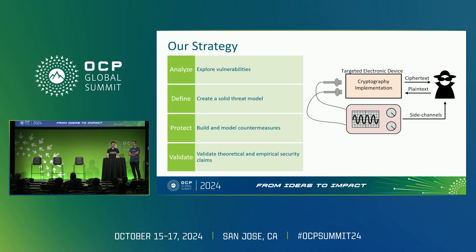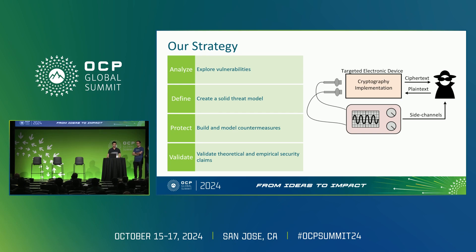We have a four-step strategy. First, analyzing — exploring vulnerabilities and creating a solid threat model defining our threat vectors. Based on the threat vectors, we build countermeasures to protect our design against side channel attacks. Then we validate both empirically and theoretically whether these countermeasures hold their claims.